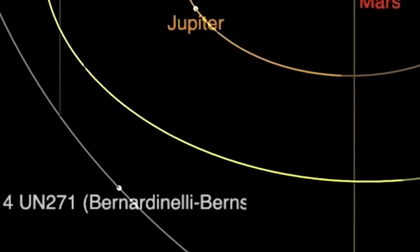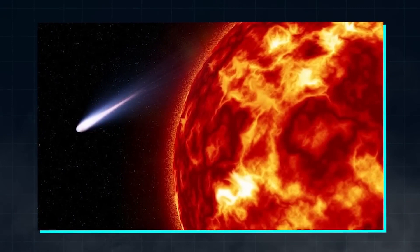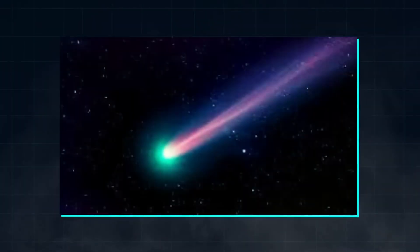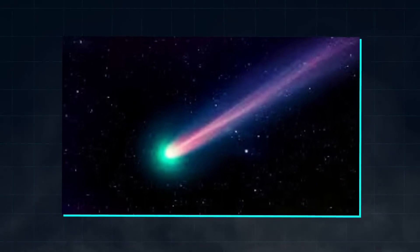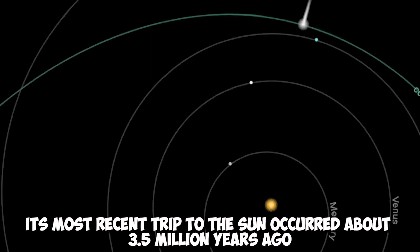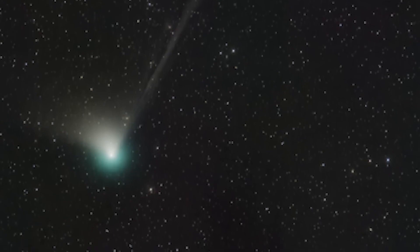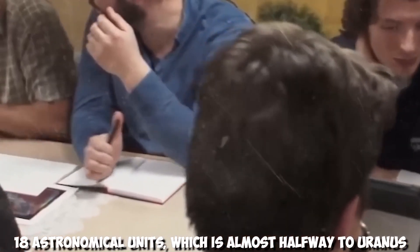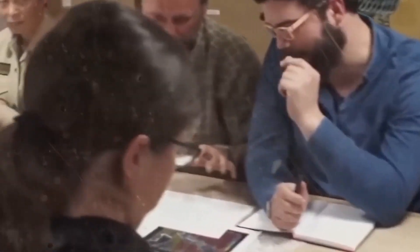Now the megacomet's discoverers and numerous co-authors have recently published the findings of three months of research into this extraordinary object in a paper. Its orbit has been analyzed and its most recent trip to the Sun occurred about 3.5 million years ago. The distance it traveled last time was only 18 astronomical units, which is almost halfway to Uranus. This time it will travel nearly twice as far.